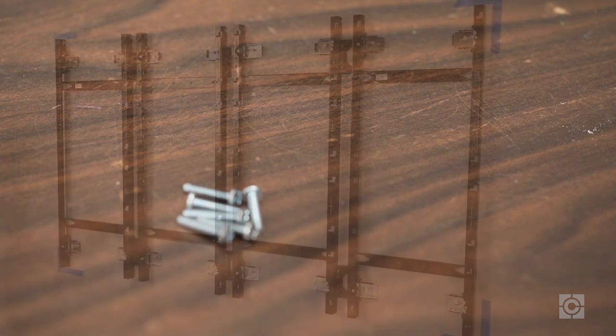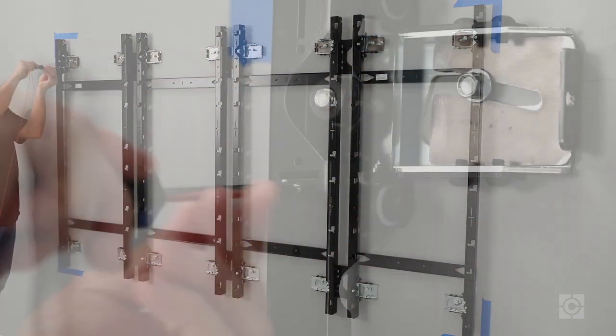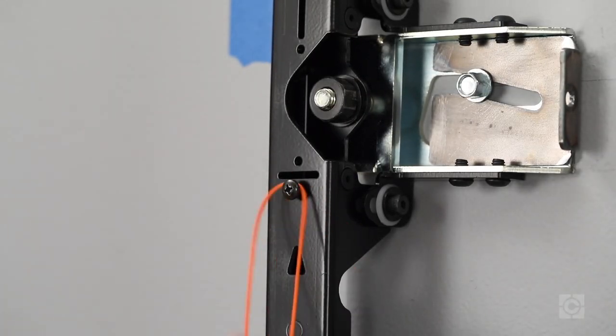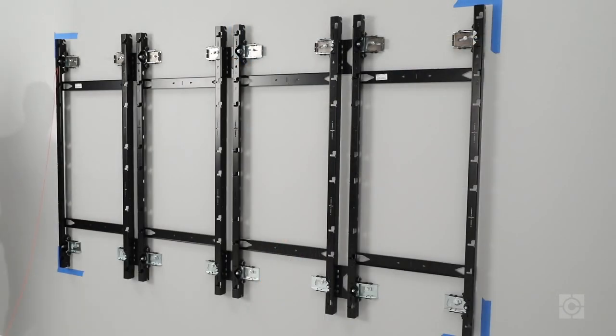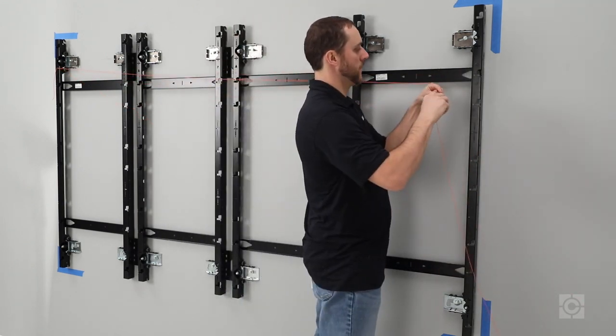Next, we will use a tapping screw and partially connect to the left upright on the left side of the video wall matrix. Route a plumb line around the screw head and tighten. Connect the plumb line similarly to the right upright in the last column.